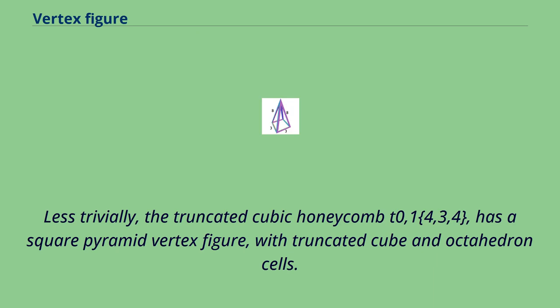Less trivially, the truncated cubic honeycomb t{0,1}{4,3,4} has a square pyramid vertex figure with truncated cube and octahedron cells. Here there are two types of edge figures: one is a square edge figure at the apex of the pyramid.